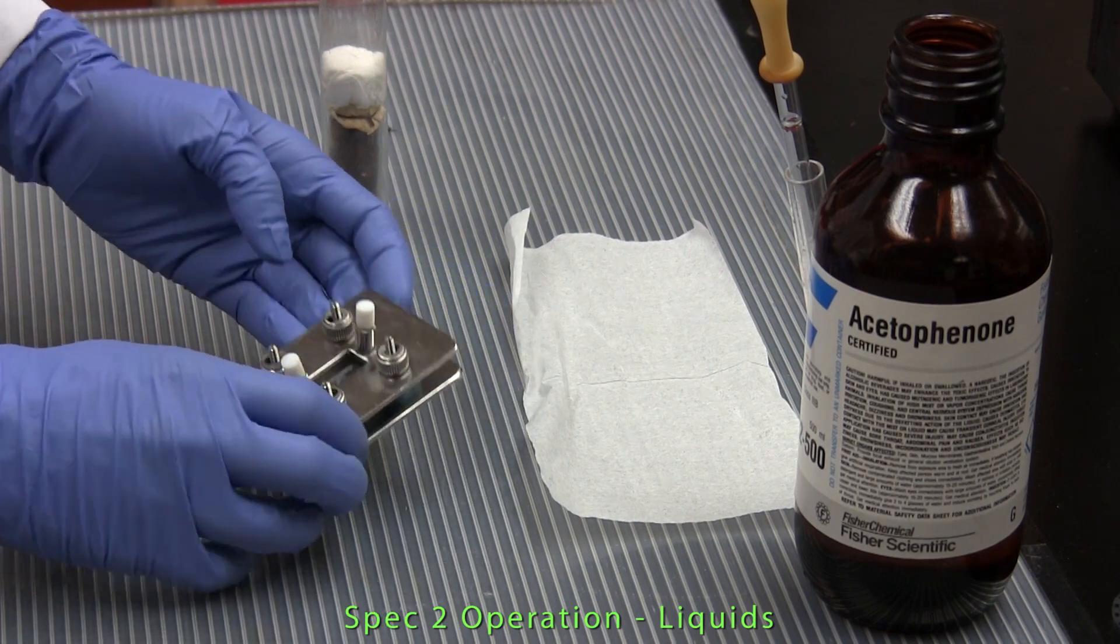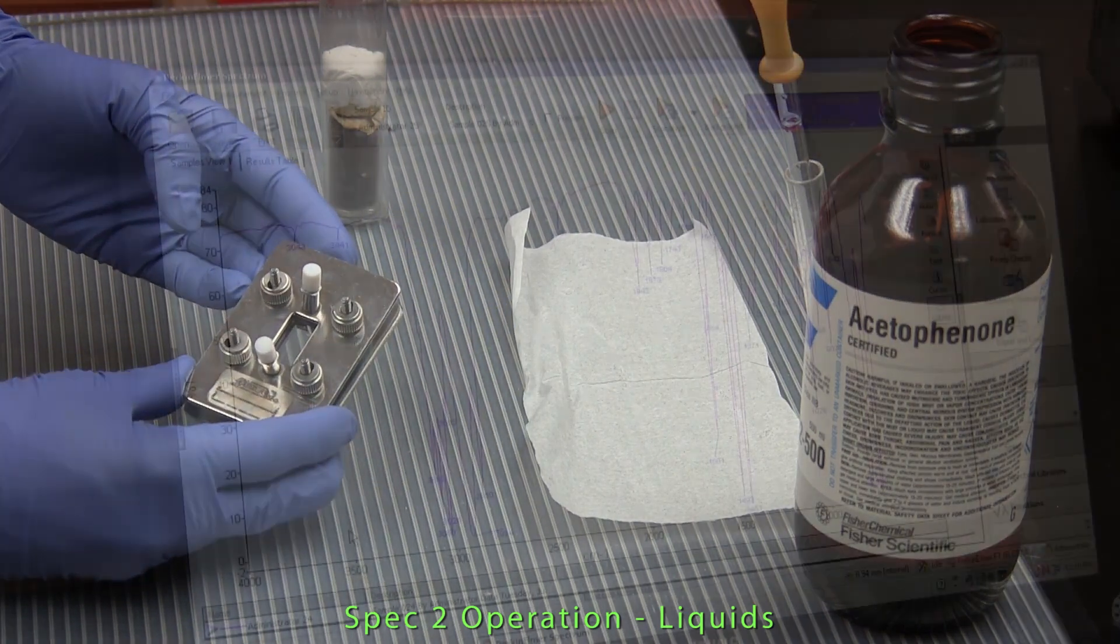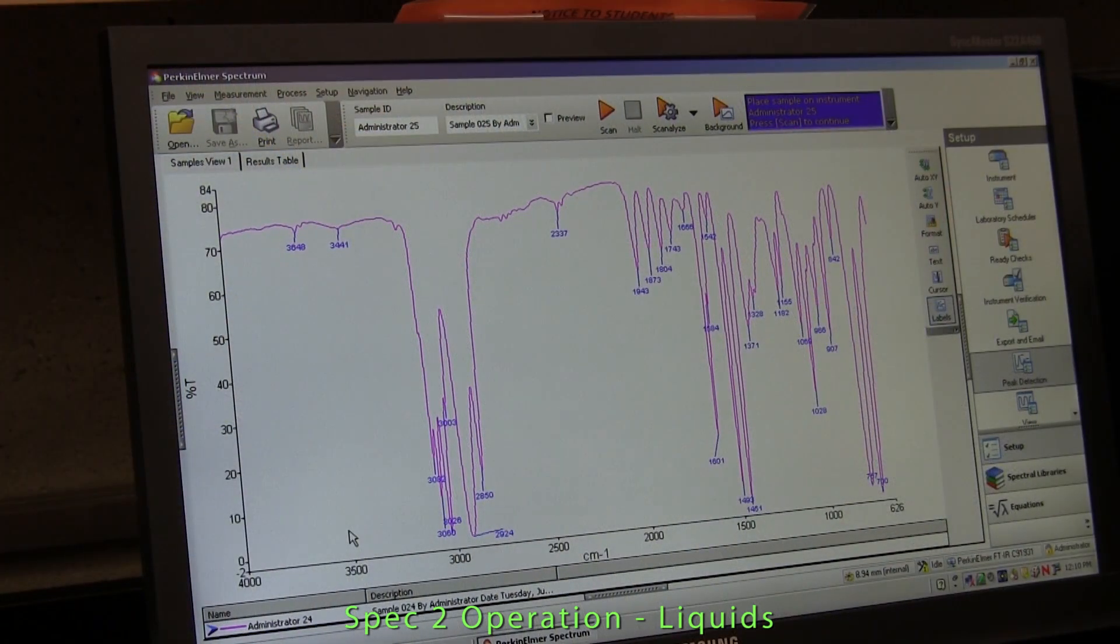We're now ready to obtain the IR spectrum of the liquid. Now in most cases the graph area of the spectrum window will show a spectrum of a sample from a previous user of the instrument. The graph area is cleared.